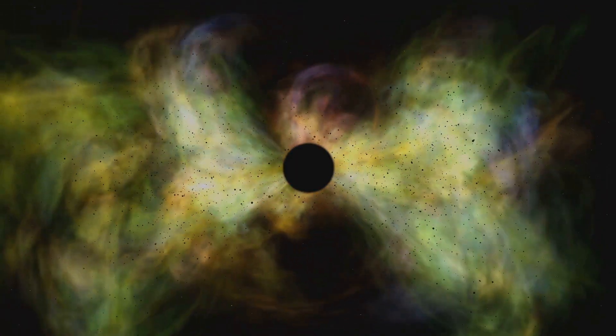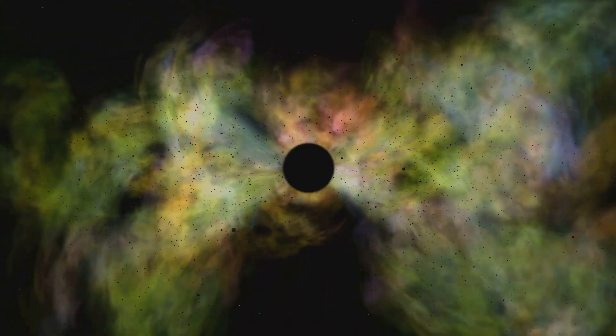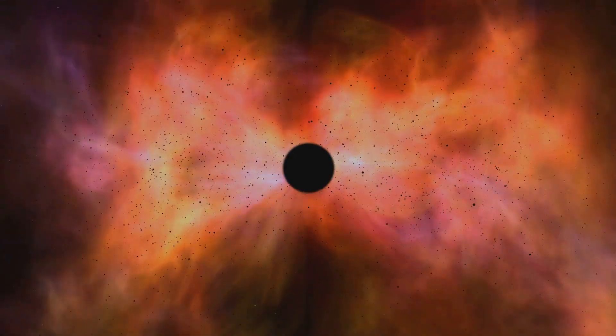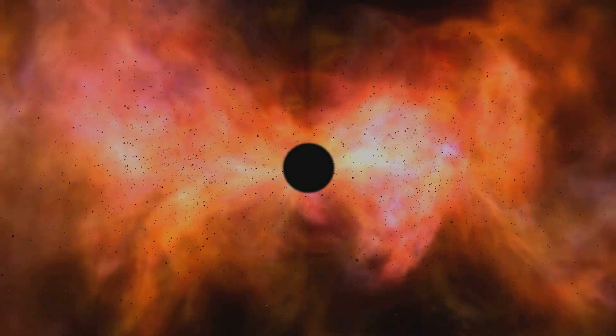...initiating a process of stellar evolution that spans billions of years. Over time, the gravitational pull becomes stronger, causing the gas and dust to clump together and form a protostar.